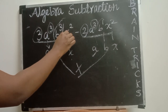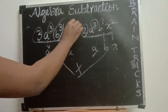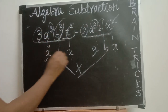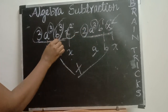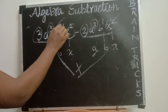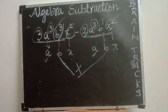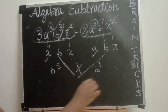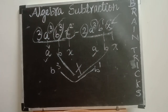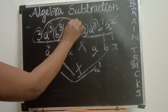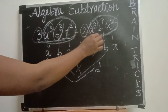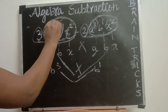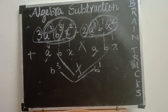Move on to variable X: X has power 2 here, and X has power 2 here — same. So A power 3 and X power 2 are matching in both terms, but B power 3 versus B power 1 are different. Since not all the variables have the same power in both terms, you cannot do subtraction. To summarize: you have to check the variables in both terms — if both terms have the same variables and the same powers, then you can do addition or subtraction.